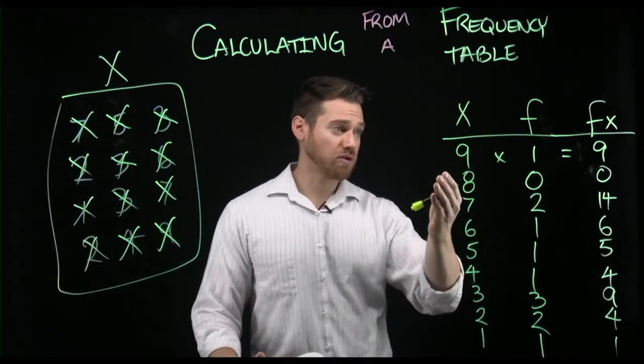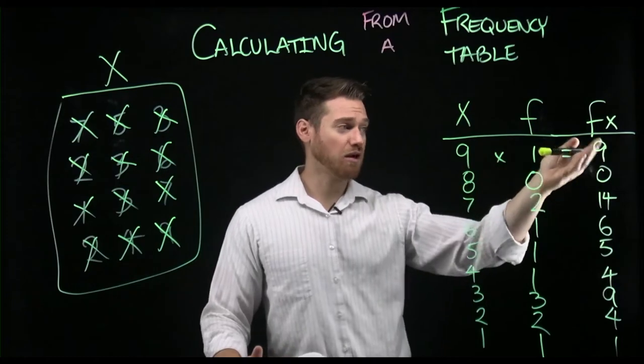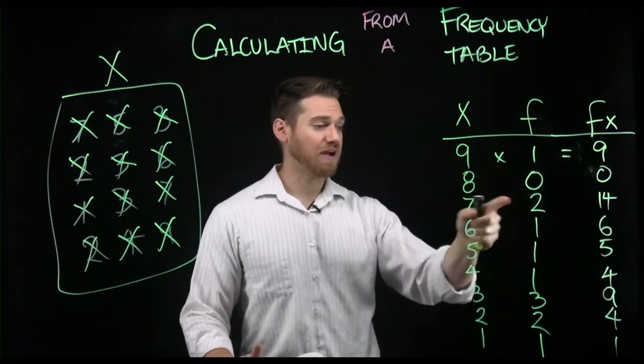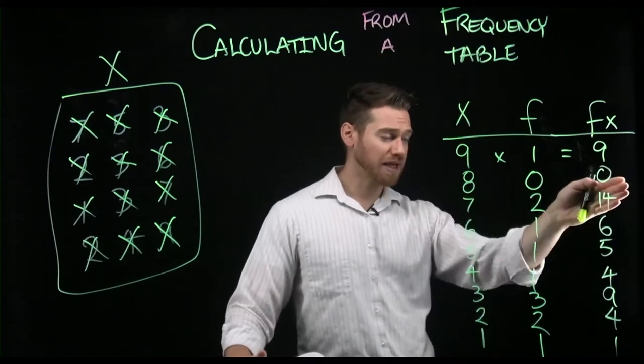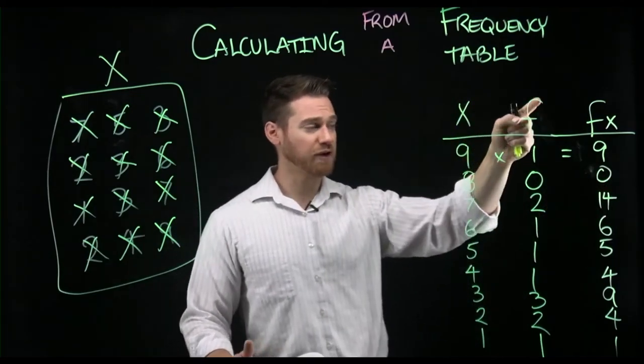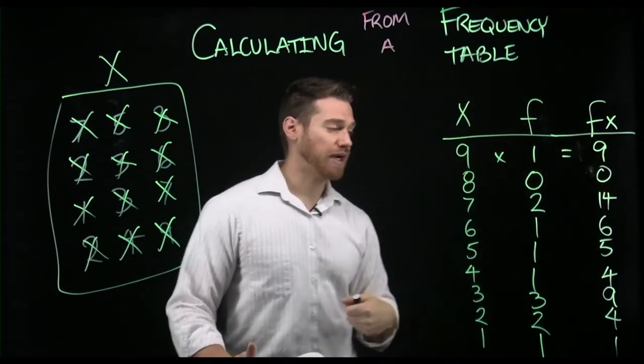So by multiplying, I'm quickly getting the total for each of the values of x. So all of the x scores that take the value of 9 sum to 9, right? But if I were to add the 7s, 7 plus 7 is 14. So multiplying across the score by the frequency it takes is just a faster way to get that.